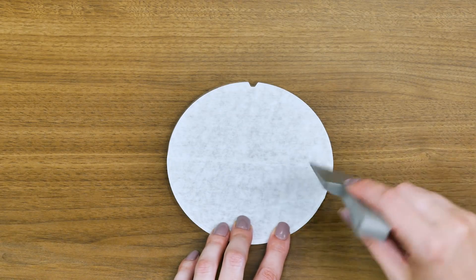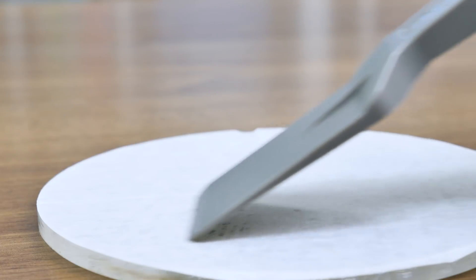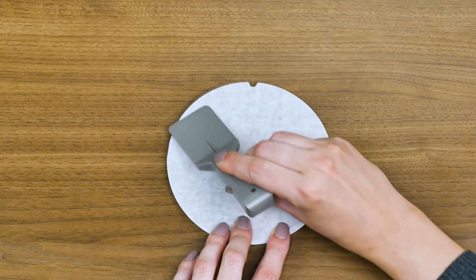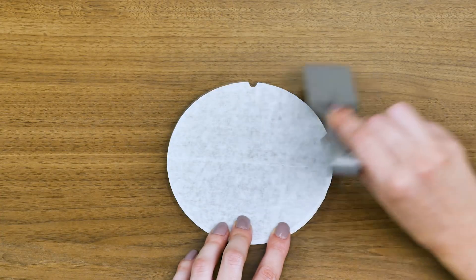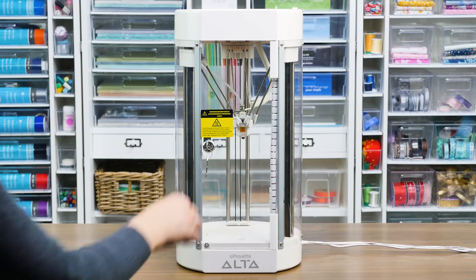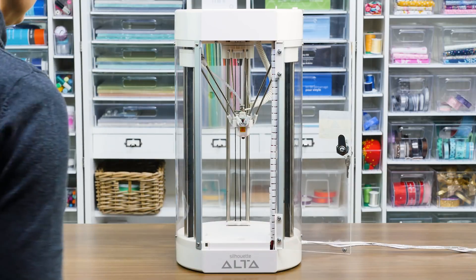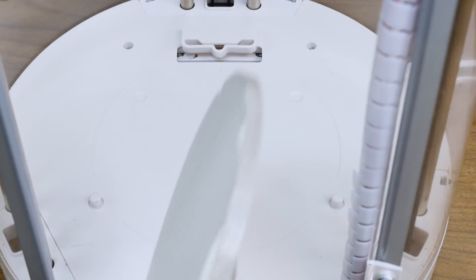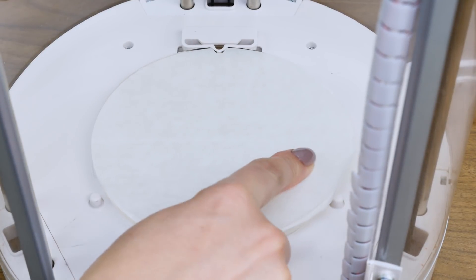If your platform tape is not lying completely flat against the platform, your 3D object won't print properly. After the tape is adhered, place the platform piece under the print nozzle with the tape side facing up. Make sure the notch of the platform lines up with the notch at the bottom of the machine.